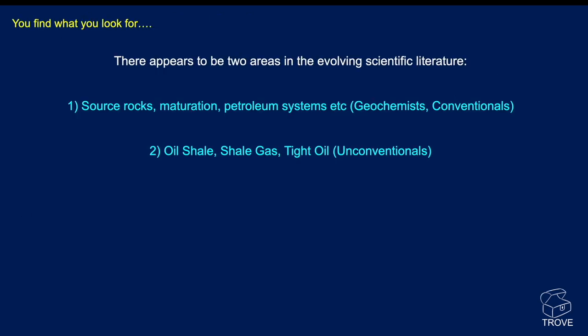What are we looking for? Well, there appears to be two areas in the evolving scientific literature. On the one hand, there's the geochemistry — the petroleum geochemistry — mainly centered around the conventional oil and gas deposits, which looks at the source rocks, the maturation, petroleum systems, etc.